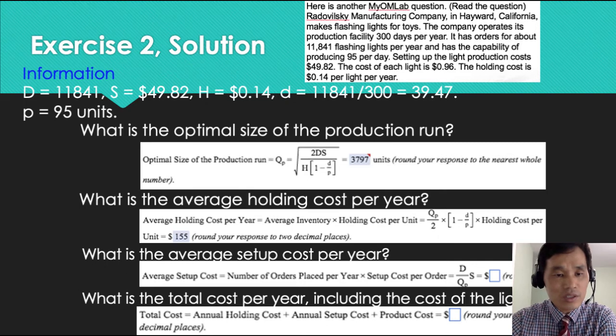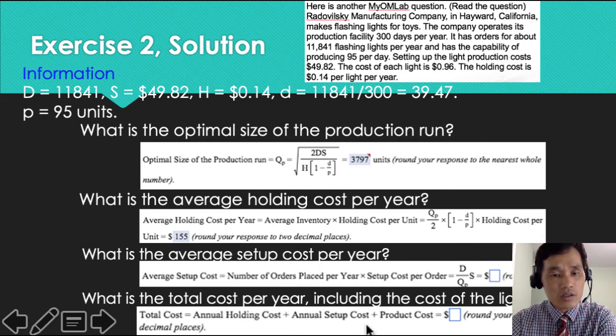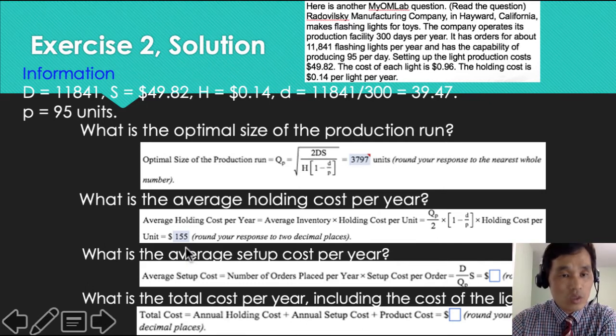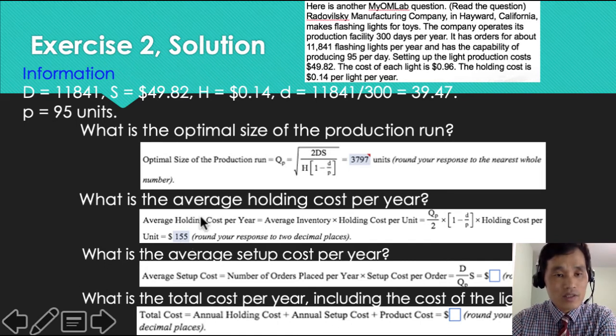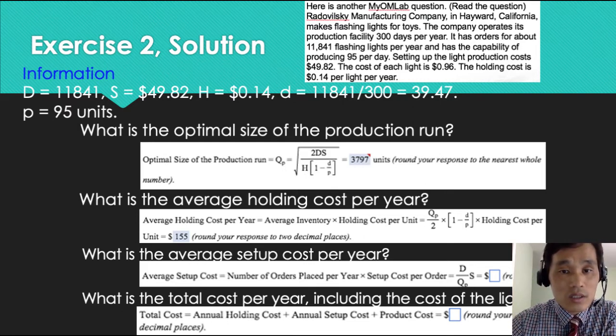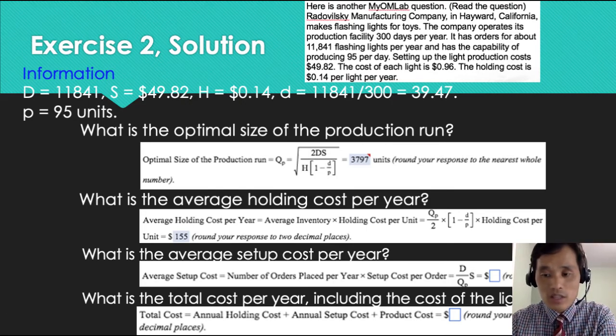Lastly, the total cost per year is a little bit different. In this case, we are looking at not only annual holding costs and annual setup costs, but also production costs because we are looking at the total costs. We will include the annual holding cost, which is 155. Because this is the point where it intersects with annual setup costs, it should be the same. So 155 plus another 155 plus production costs. What is the production cost? The production cost is the cost times the number of things that you are producing.